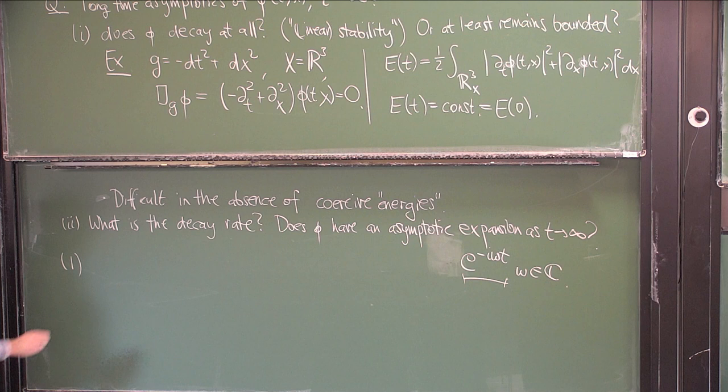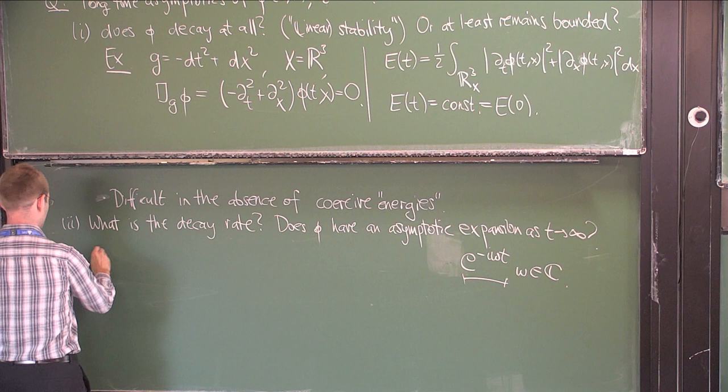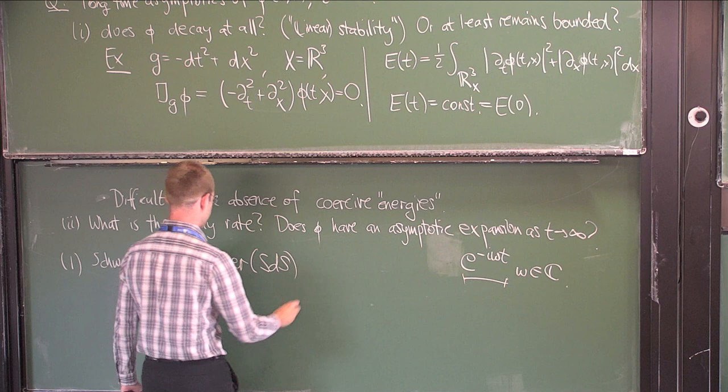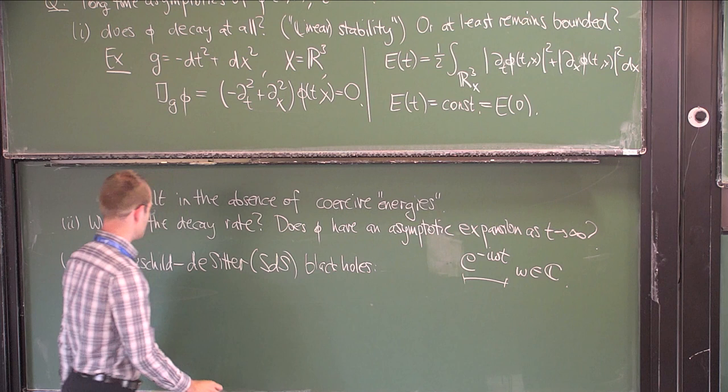I want to explain one particular setting of spacetimes, which is that of Schwarzschild-de Sitter space. These are certain four-manifolds.